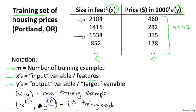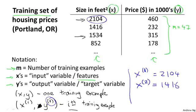So for example, x^(1) refers to the input value from the first training example. So that's 2104, because that's x in the first row. x^(2) will be equal to 1416, that's the second x. And y^(1) will be equal to 460. Because that's the y value for my first training example.